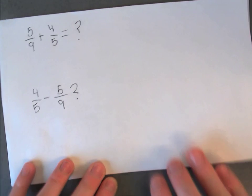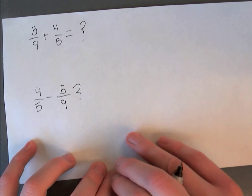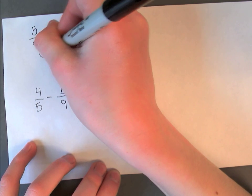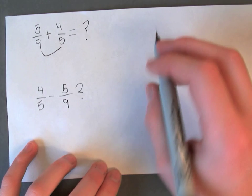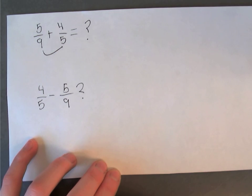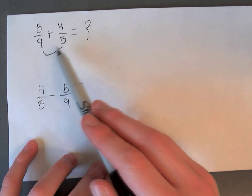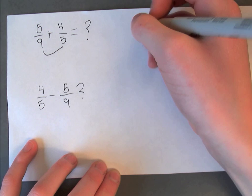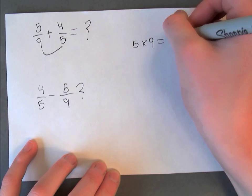So first of all for both of these we need to find a common denominator. An easy way to find that out is by multiplying the two denominators. We're finding a number that both numbers go into equally without a decimal. So five times nine equals 45.